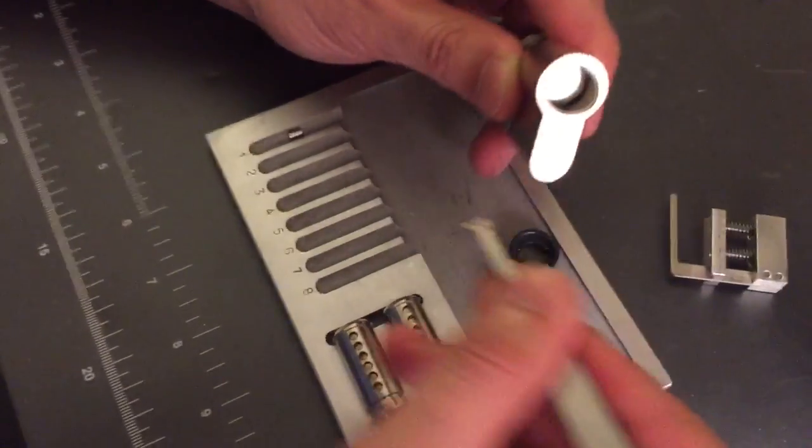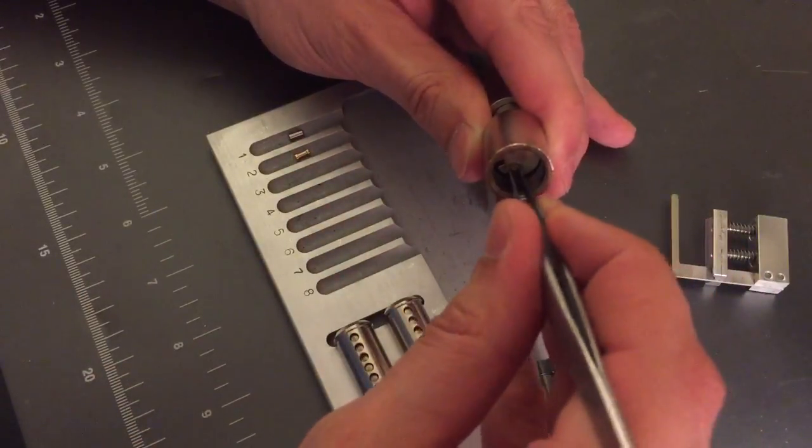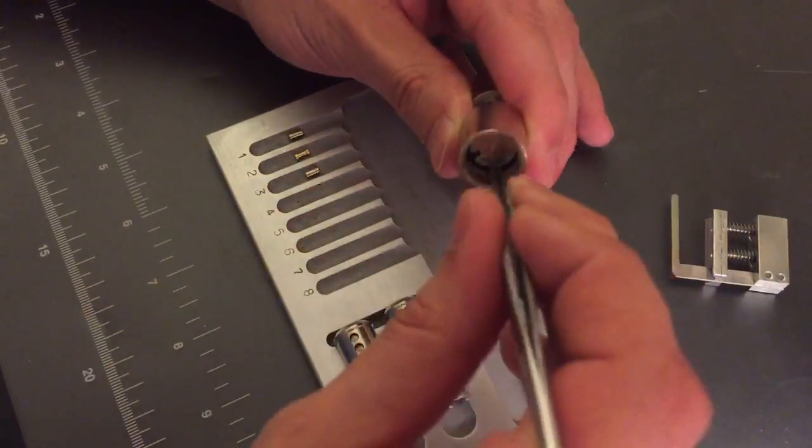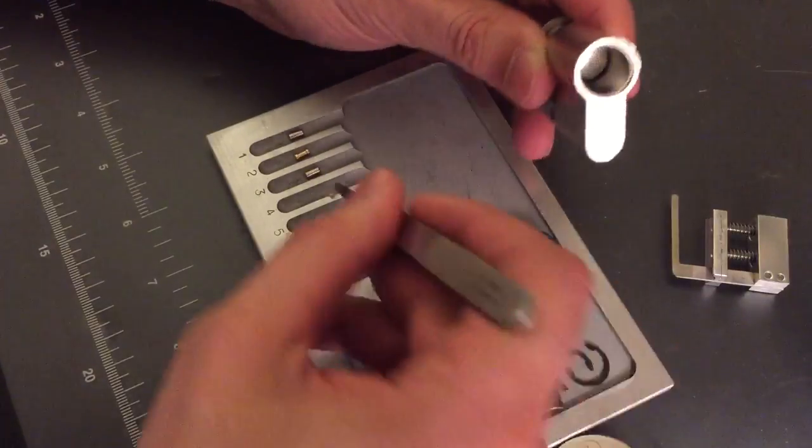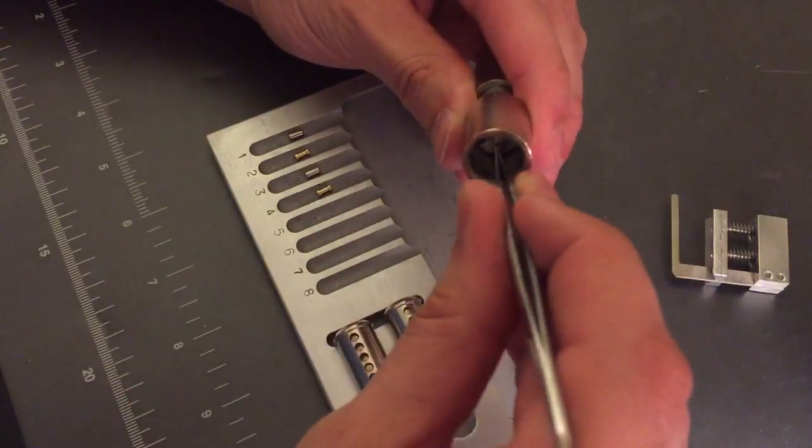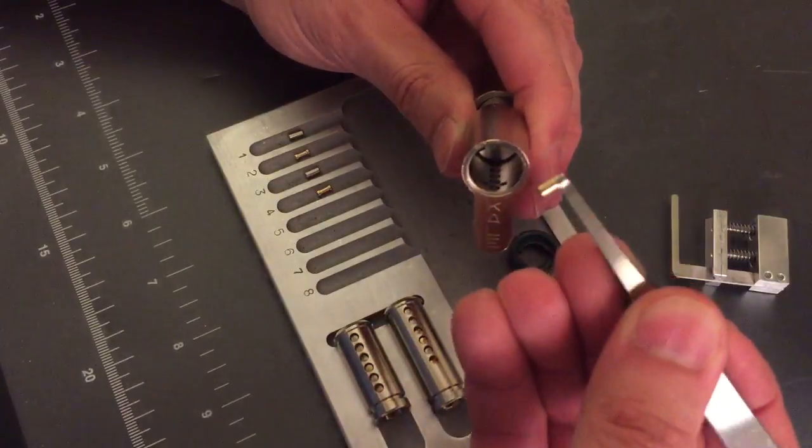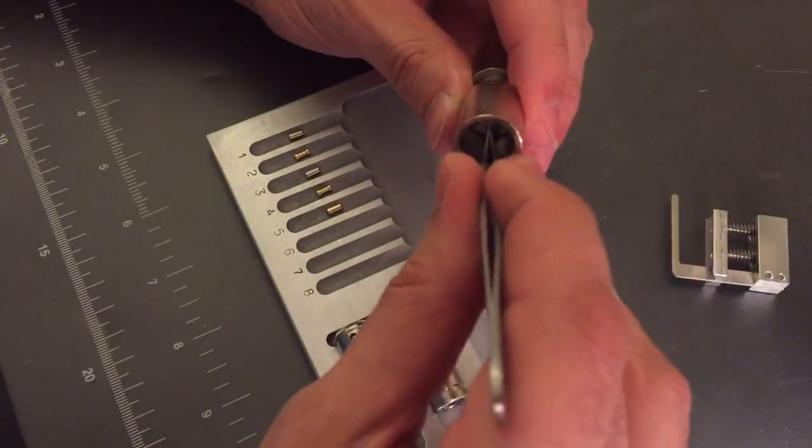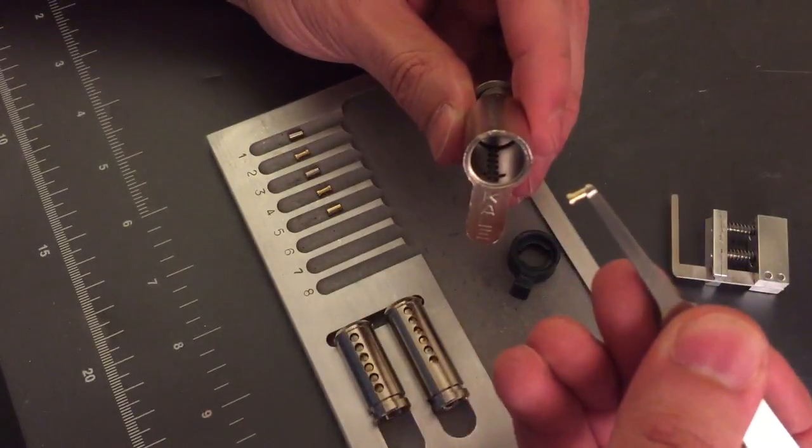Two is a spool. Three appears to be another steel standard pin. Four is a spool—I didn't feel that at all. Five is a brass standard. And six is a spool.